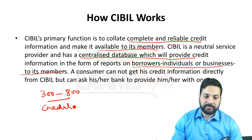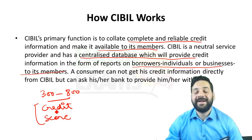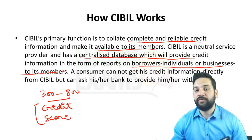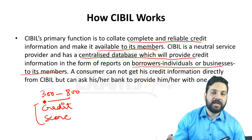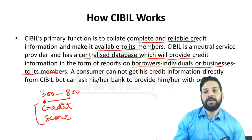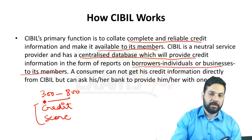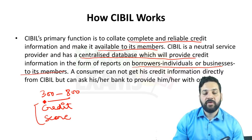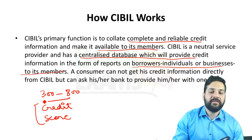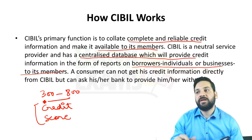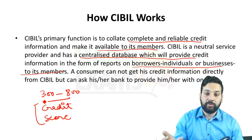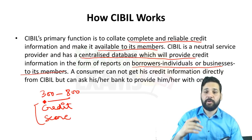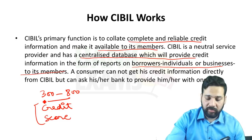The credit score represents the credit history of a person or entity — whether it is an individual, an LLP, a private limited company, or a public limited company. Based upon this score, banks will either accept or reject the loan application. That's how CIBIL works.